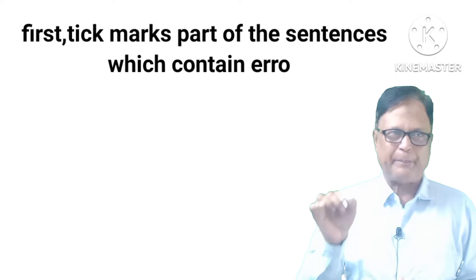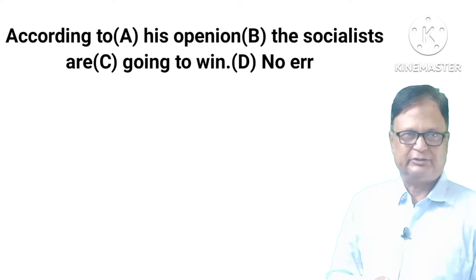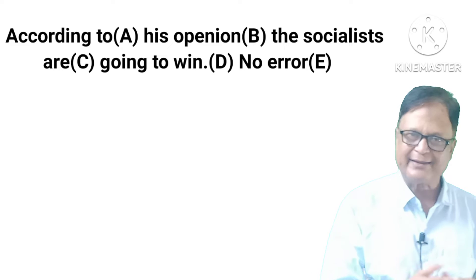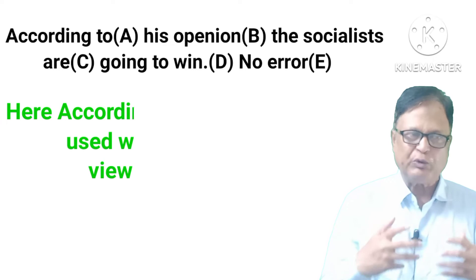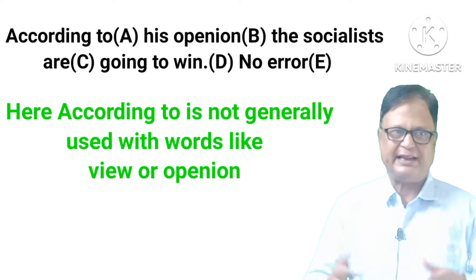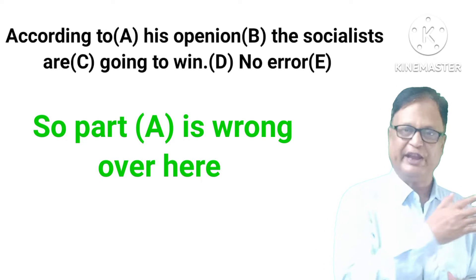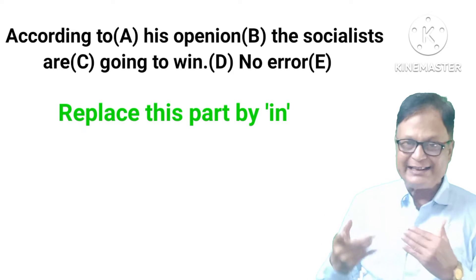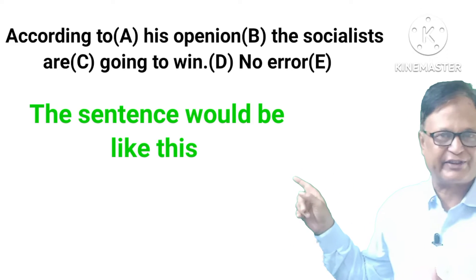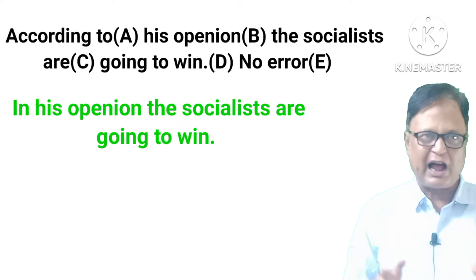First, tick the part of the sentence which contains an error. First sentence: 'According to his opinion, the socialists are going to win.' Here, 'according to' is not generally used with words like 'view' or 'opinion.' So part A is wrong. Replace this part with 'in.' The corrected sentence is: 'In his opinion, the socialists are going to win.'